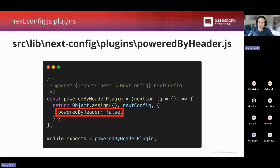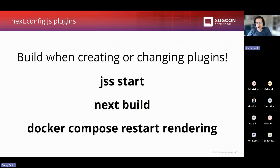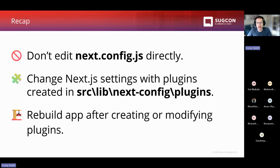Here's a simple example — create a file called powered-by-header.js inside the plugins folder and set poweredByHeader to false. This will modify that property in next.config.js without you having to edit that file directly. While this is a bit contrived for such a small setting, for features that have a lot of settings — like a bunch of rewrites and redirects — using config plugins keeps all those settings together in one file, making for cleaner code and easier upgrades. Anytime you create or change a plugin, remember you need to restart your Next.js application — they don't get hot reloaded. Recap: don't edit next.config.js directly; use plugins created in the plugins folder, and always rebuild your app after creating or modifying plugins.